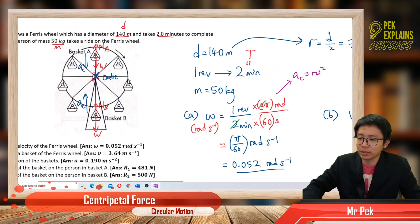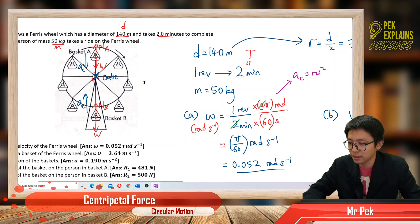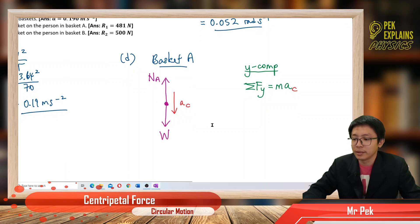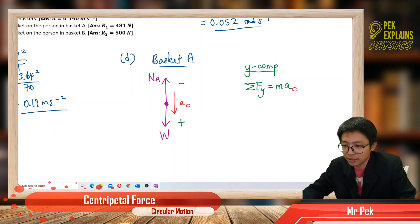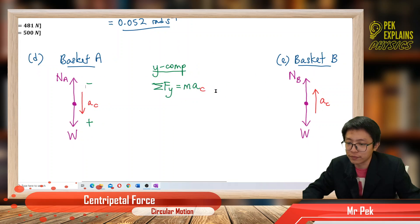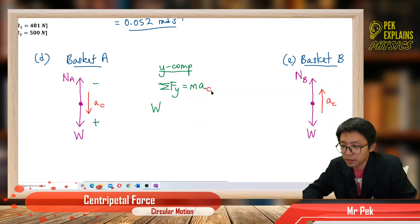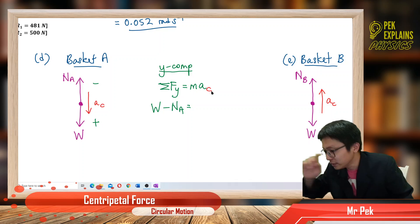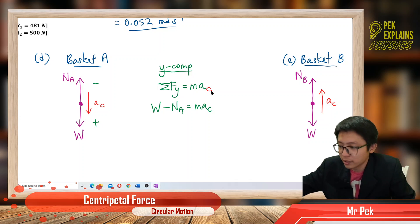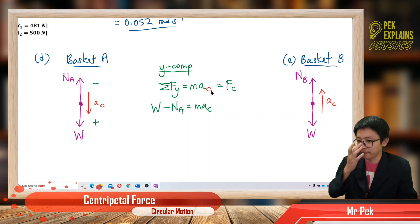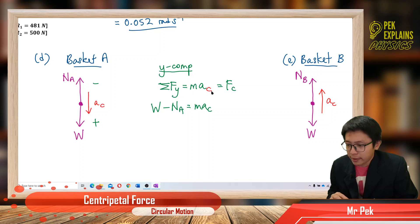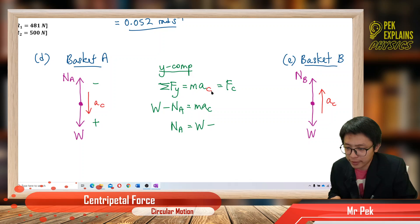Let's do basket A first. AC is downward, normal force is upward, weight is downward. Following the rule — acceleration direction is positive, opposite is negative — weight is positive and normal force is negative. So: W minus NA equals MAC. Rearranging: NA equals Mg minus MAC, or factoring out mass: NA equals M times (G minus AC).